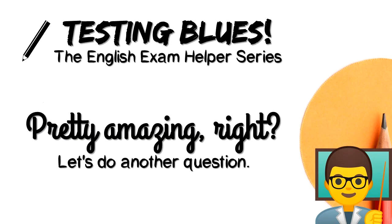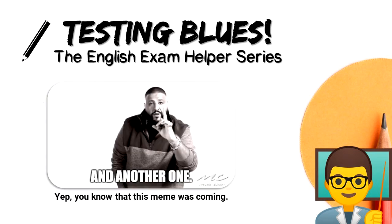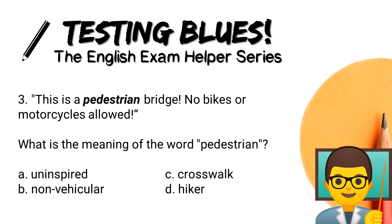Let's do another question. 'This is a pedestrian bridge. No bikes or motorcycles allowed.' What is the meaning of the word 'pedestrian'? A. Uninspired. B. Non-vehicular. C. Crosswalk. Or D. Hiker. Alright, 10 seconds. Timer starts now.